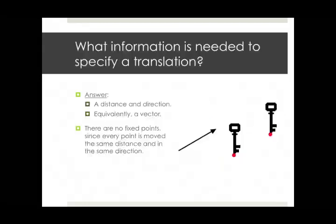Finally, let's ask our question about a translation. What information is needed to specify a translation? Well, you could give either one of two equivalent answers. You could either say a distance and direction or equivalently, to be fancy, you can say a vector. An arrow that indicates that distance and direction.